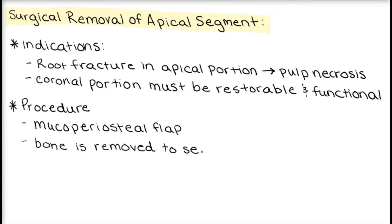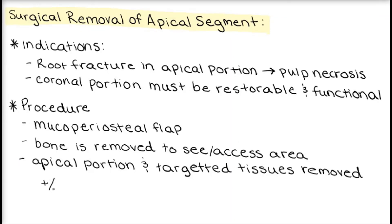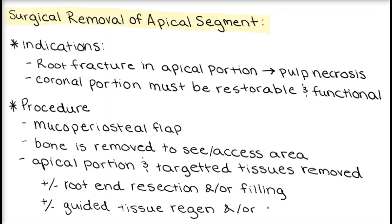This procedure involves raising a mucoperiosteal flap, removing bone as needed to visualize and access the fractured portion of the root. Then the apical portion and targeted surrounding tissues are removed. Root end resection or filling might be indicated at the time that the root fragment is removed. Additionally, guided tissue regeneration or bone replacement may be used if needed.